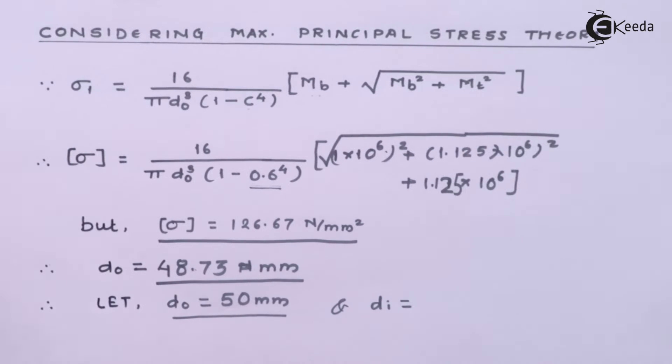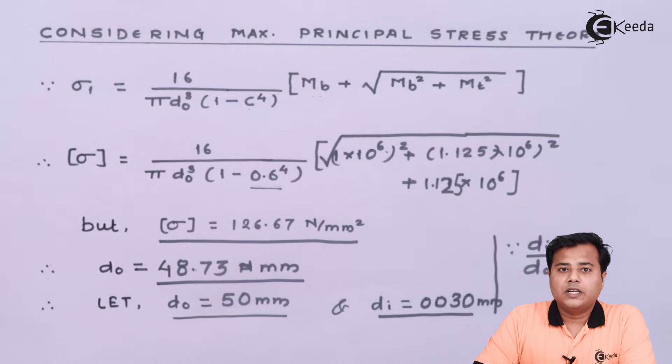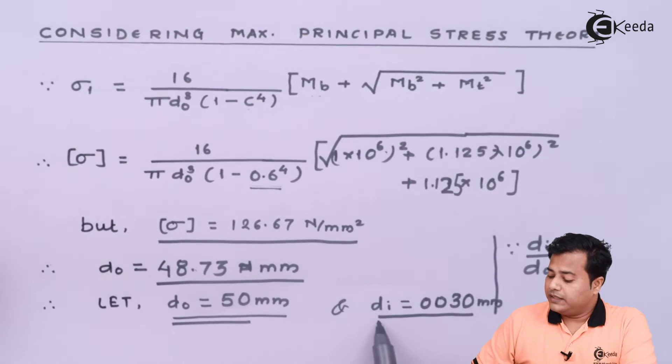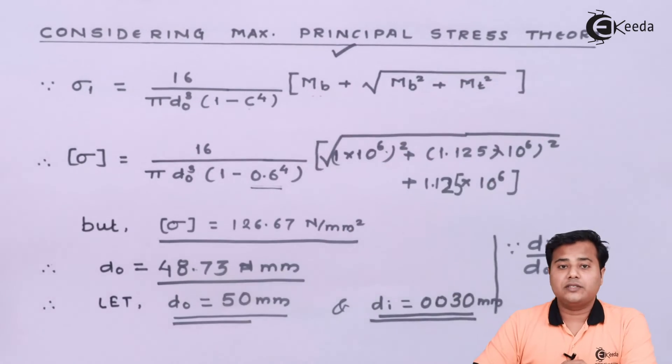So outer diameter is 50 mm. In case of the inner diameter we already know this relation and therefore with this value substituting will get Di somewhere equal to 30 mm. So there we come out with the design part and these are the design diameters for the given case considering maximum shear stress theory.